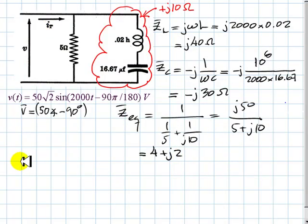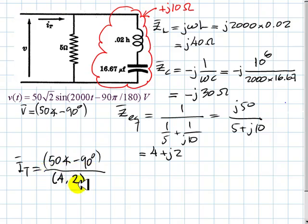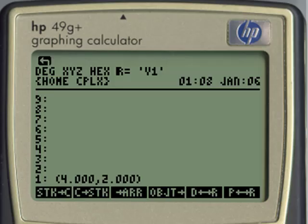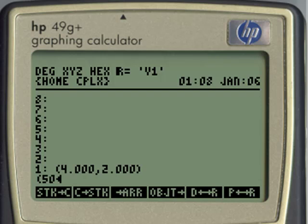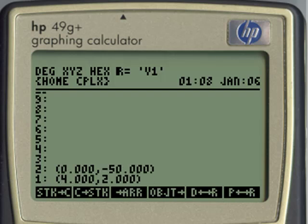To find the total current IT as a phasor, that is just this voltage, 50 with negative 90 degrees divided by that impedance, 4, 2. I enter the voltage source, parenthesis, 50, alpha, red, 6 for the angle sign, negative 90 degrees, enter, swap, divide,